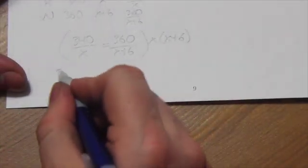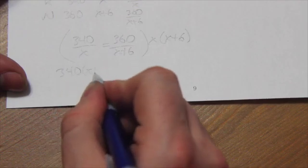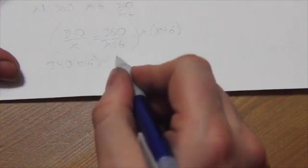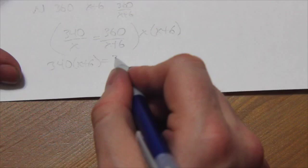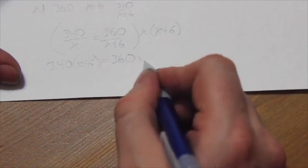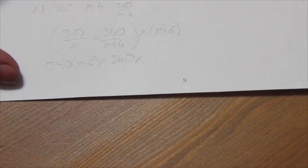On the left-hand side, the X cancels and you're left with 340 times X plus six. On the right-hand side, the X plus six cancels and you're left with 360 times X, which is kind of nice.